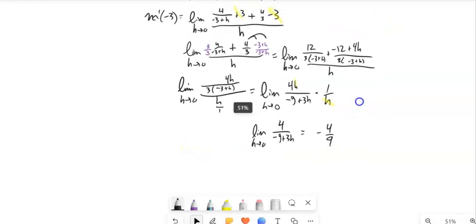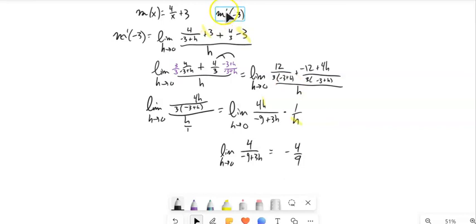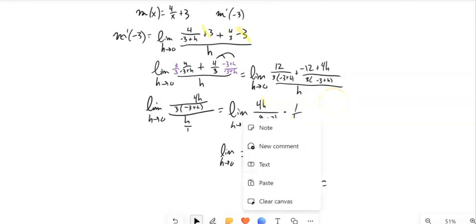So zooming out a little bit and thinking about my original problem. The derivative of M at negative 3. M prime at negative 3 is negative 4 ninths.